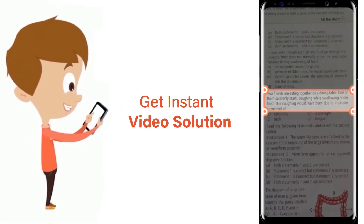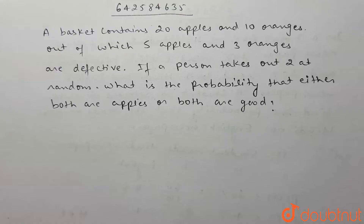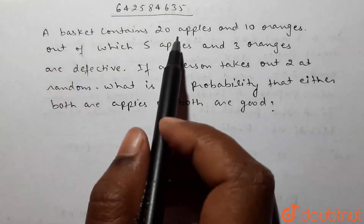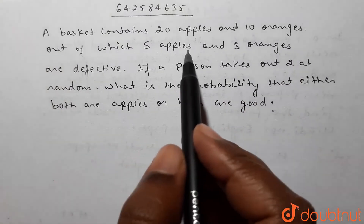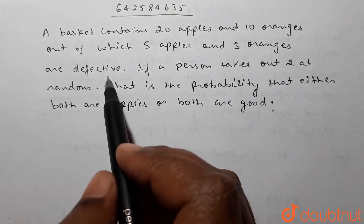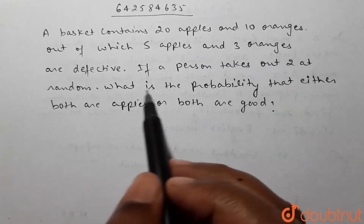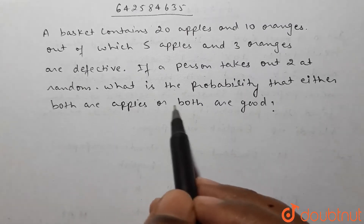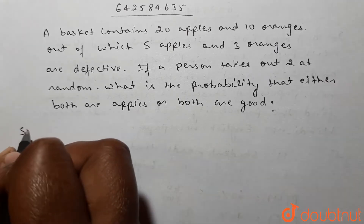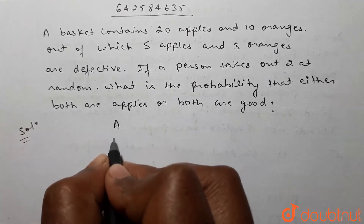A basket contains 20 apples and 10 oranges, out of which 5 apples and 3 oranges are defective. If a person takes out two at random, what is the probability that either both are apples or both are good?